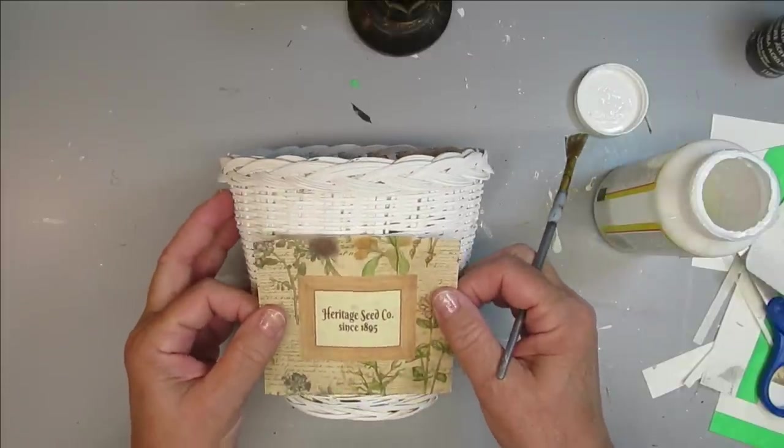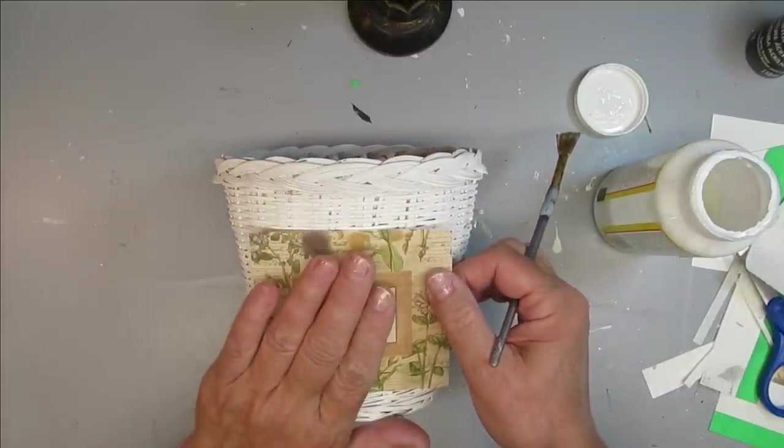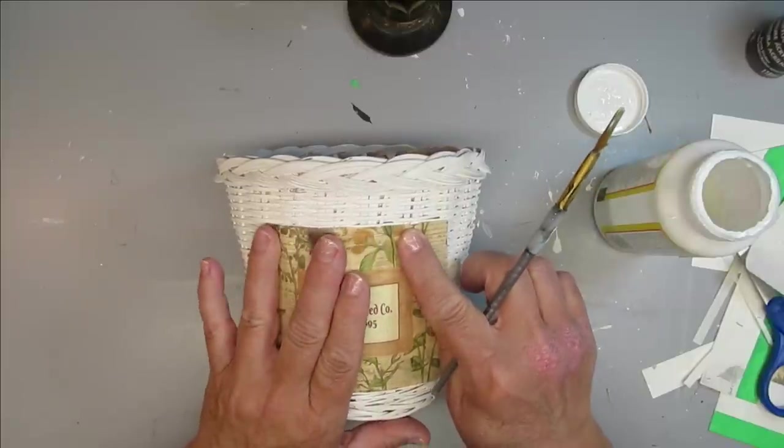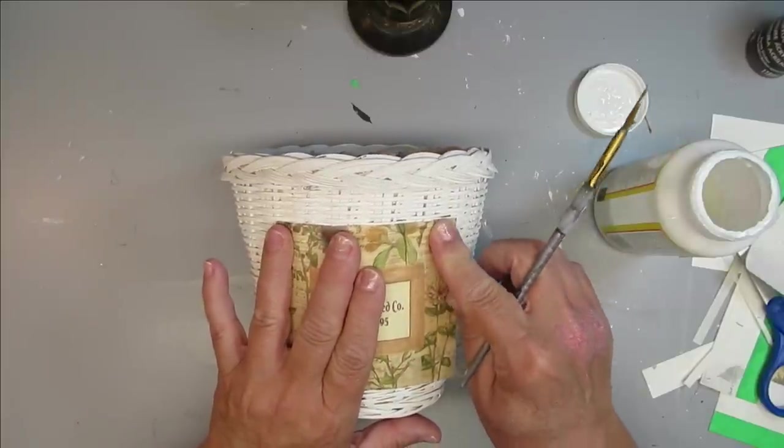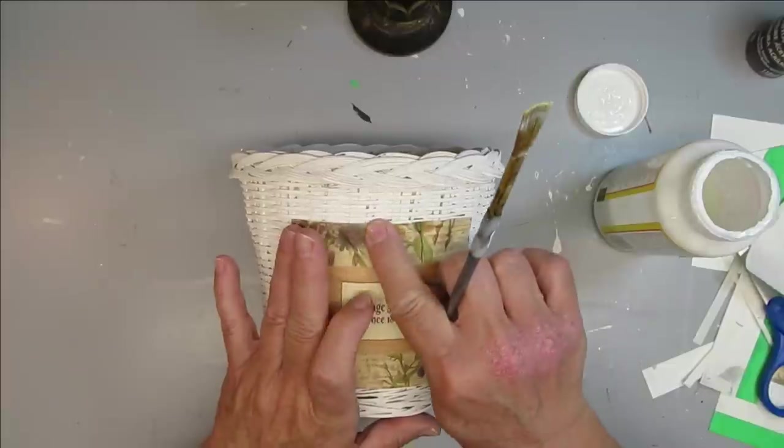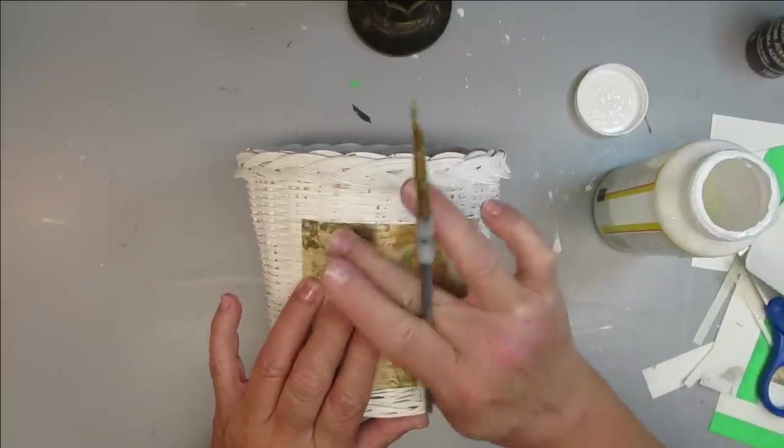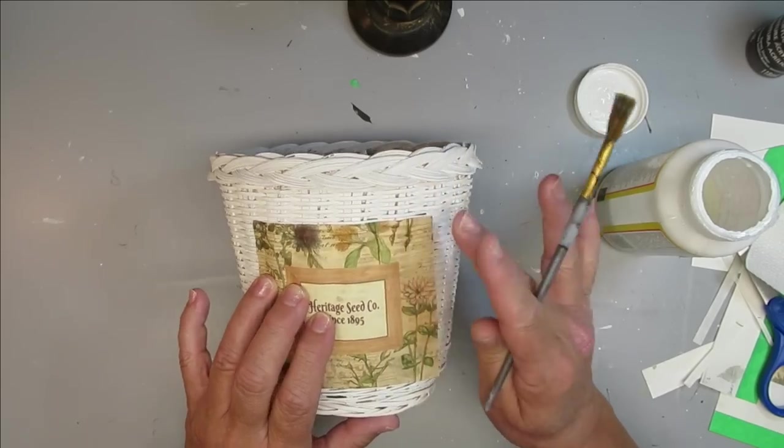I'm going to be putting the label on and then using my finger to push it right into all of the weaves and the bumps and everything. So I want this to stick really well. I don't want it to look like it's floating on top. I want it to actually take on the texture and dimension of the basket itself.